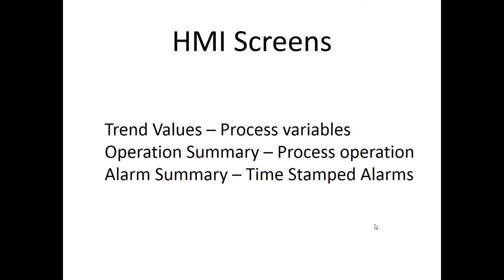HMI screens — as shown on the Flex — include a variety of views: trend values that monitor how the process is going, an operational summary telling you how many parts are being made or if everything is working correctly, and an alarm summary displayed in red with time-stamped alarms indicating when the system stopped or what action was taken.